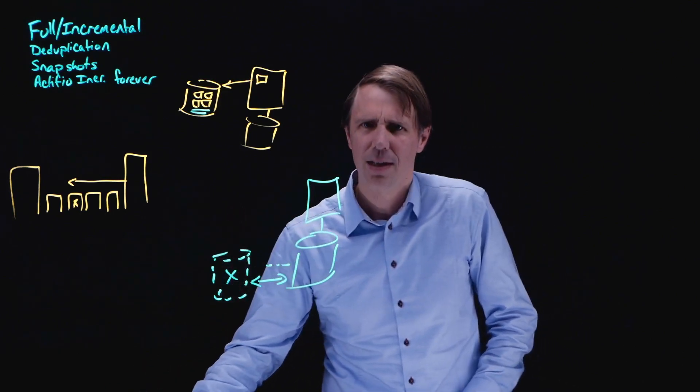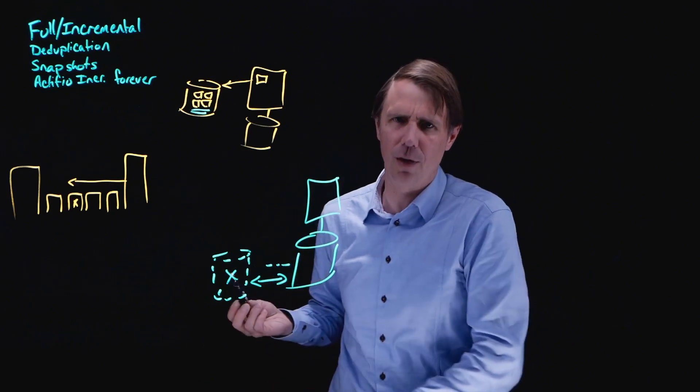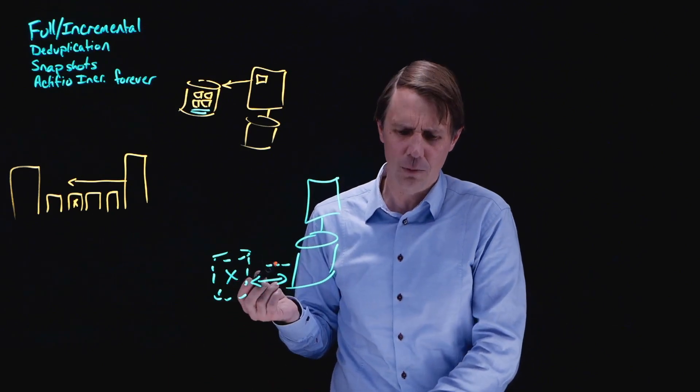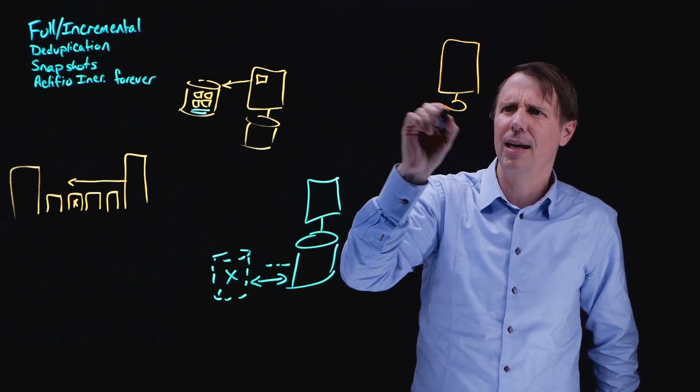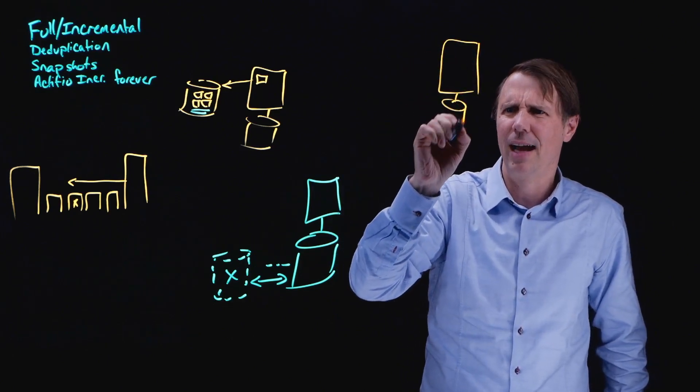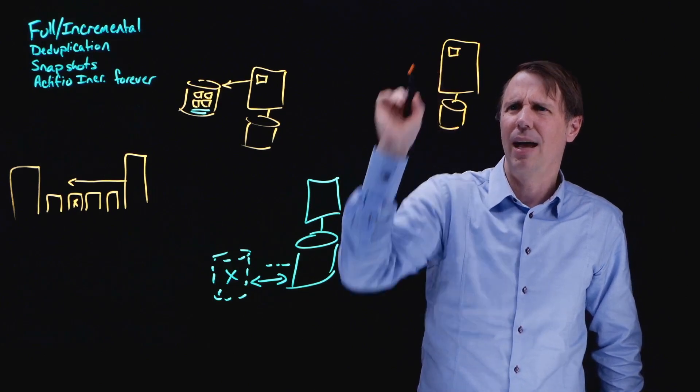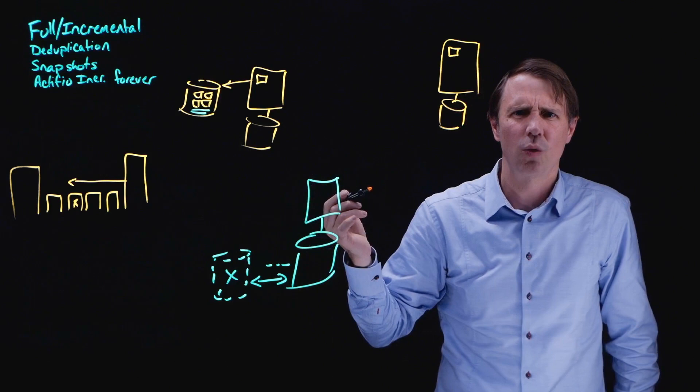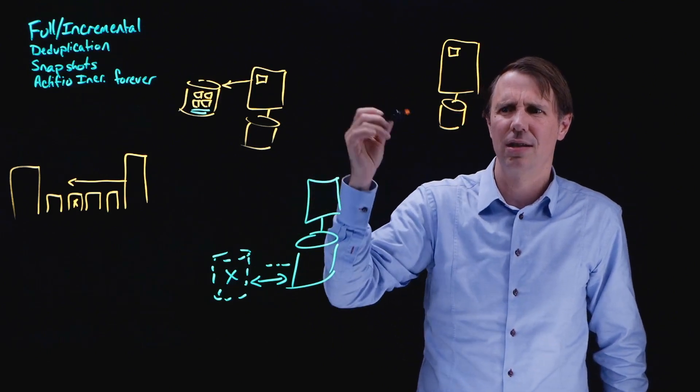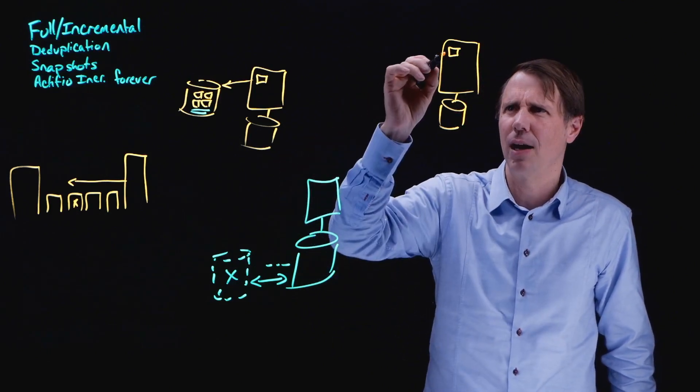The third option is the Actifio incremental forever strategy, and that is really the best of both worlds. With Actifio, what we do is we install what we call a connector, which is a very lightweight agent inside of the backup server. And what it does, it tracks what blocks change. It's not doing CPU intensive stuff. It's just tracking those blocks.